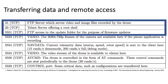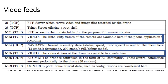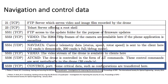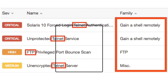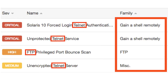Three of those ports were for transferring data and for remote access by an administrator. Two of those ports were for video feeds, which we would expect of a drone that has a camera. And we need a couple of ports for navigation and control data. Furthermore, we did a vulnerability assessment using a commercial tool and found that the drone had several critical, as well as high and medium vulnerabilities. We're going to take advantage of these vulnerabilities to access the drone.